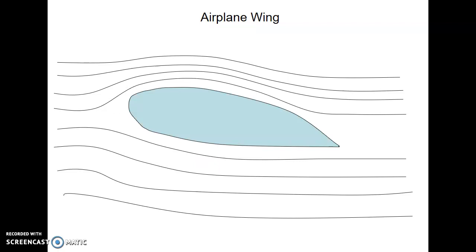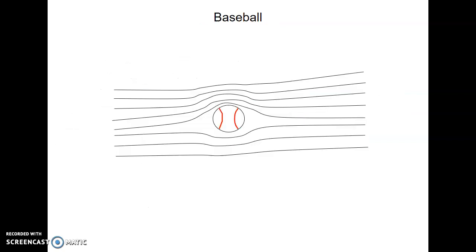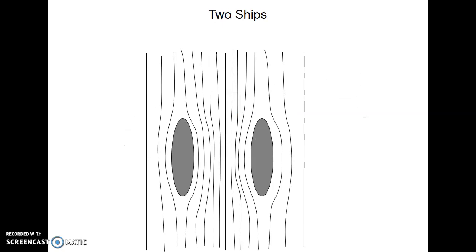Here's another airplane wing — streamlines far apart below and close together above, so high pressure below and low pressure above means the wing is taking off. Another baseball example — this one is a riser. Two ships with streamlines close together between them means low pressure because water moves faster there, so the two ships will collide. Similarly, when a tractor trailer zips past you on a motorcycle, it moves a large amount of air at very fast speed creating very low pressure. You're moving a little bit of air at relatively low speed — you're high pressure — so you get sucked toward the tractor trailer.